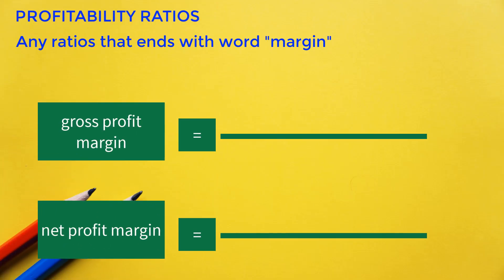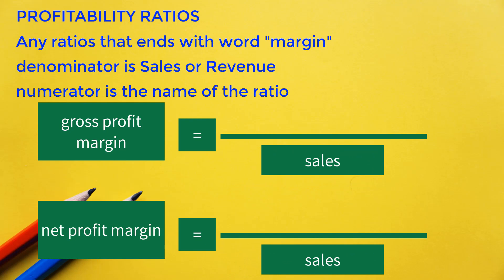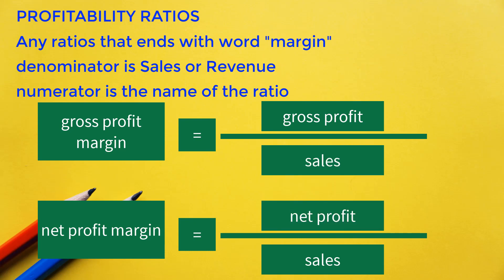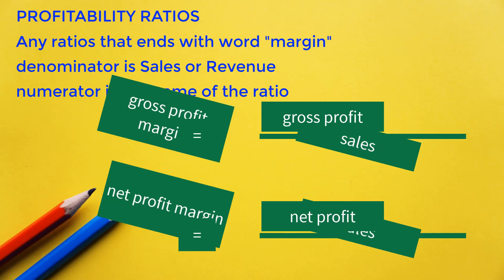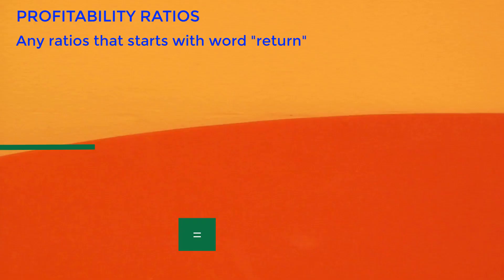Any ratio that ends with the word 'margin' has sales (also known as revenue) as the denominator. The numerator is the name of the ratio. For gross profit margin, the numerator is gross profit. For net profit margin, the numerator is net profit or net income. The same thing applies to operating profit margin.